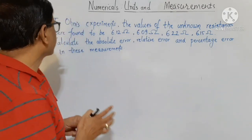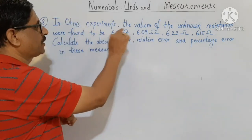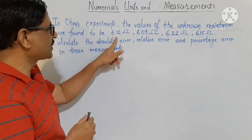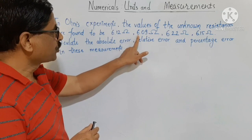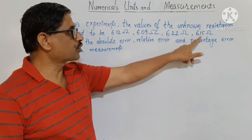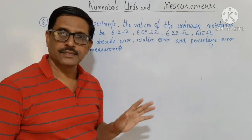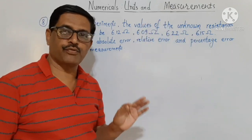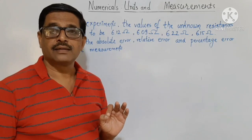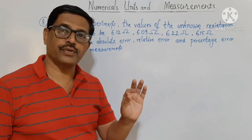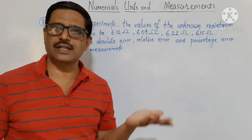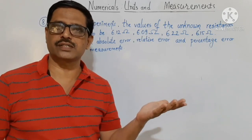In Ohm's experiment, four observations of the unknown resistance are taken: 6.12 ohm, 6.09 ohm, 6.22 ohm, and 6.15 ohm. From these four values, we first determine the most probable value of the measurement.